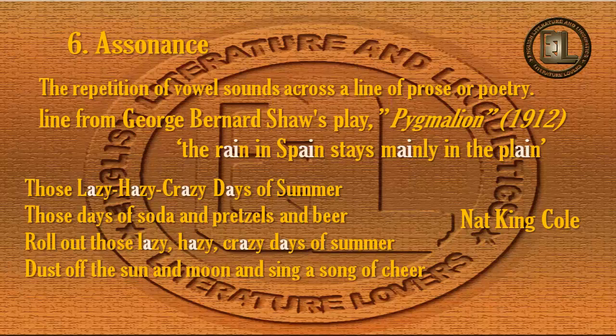The next example from poetry is lines from the poem written by Nat King Cole. The poem is titled 'Those Lazy Hazy Crazy Days of Summer.' The lines are: 'Roll out those lazy hazy crazy days of summer, dust off the sun and moon and sing a song of cheer.' The vowel 'a' has been repeated in the first and the third line. This is assonance.